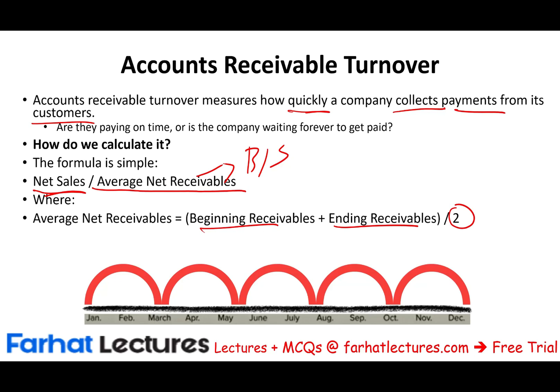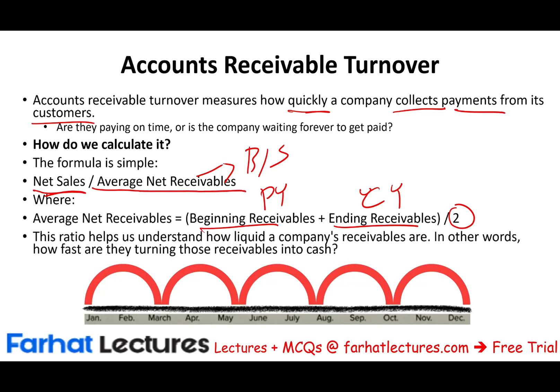The beginning receivable is year 1, and the ending receivable is year 2 — the prior year plus the current year divided by 2 to get the average. These ratios help us understand how liquid a company's receivables are, in other words, how fast they are turning the receivable into cash.